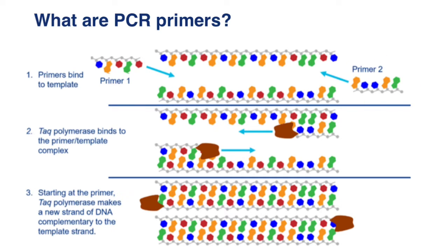Basically, primers are short complementary sequences to one strand of the DNA and to the other strand of the DNA. Both strands of the DNA would be complementary to each other. That means that for primer one to be complementary to a strand of the DNA, the sequence has to be the same as that strand of the DNA. And for primer number two, in order to be complementary to the other strand, the sequence has to be the same as the sequence of that other strand.